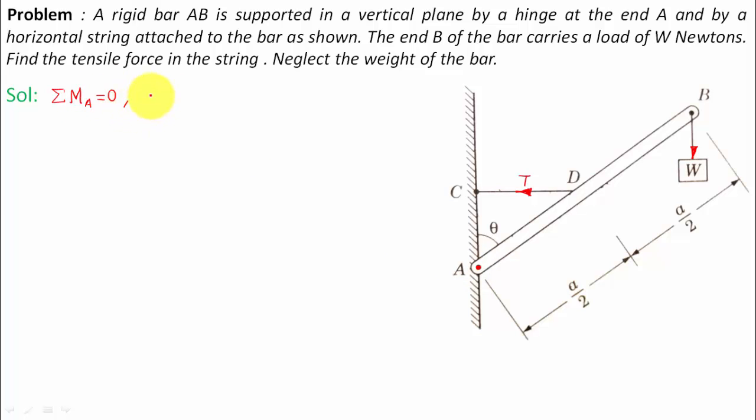So we have this force W. This is the line of action of W, and this is the perpendicular distance. Let's say the name of this particular point is P. So what we've got to do is: W force multiplied by perpendicular distance AP—that's W multiplied by AP.